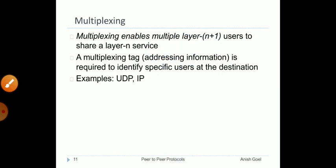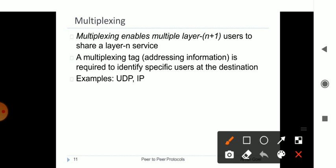Multiplexing is the process of taking information from multiple users and combining it into a single stream over a line, then demultiplexing it back into multiple lines for the respective users. The protocols used are UDP (User Datagram Protocol) and IP (Internet Protocol).